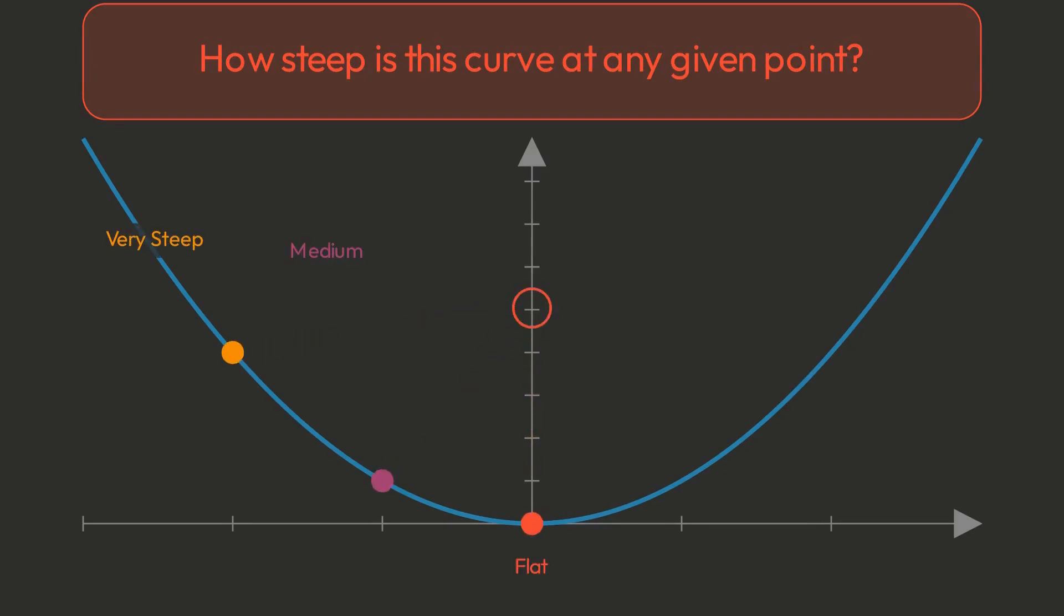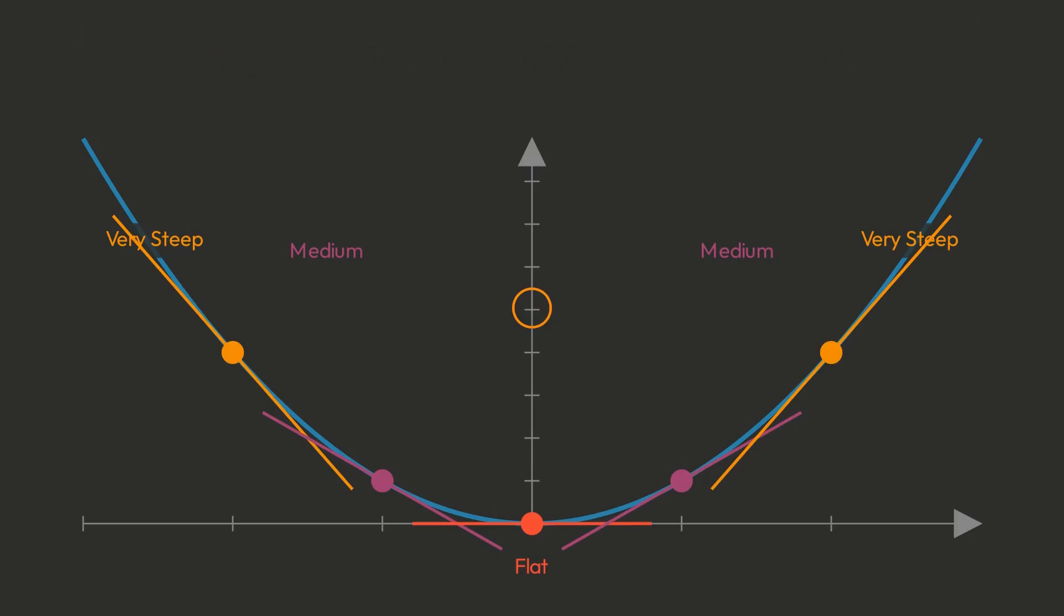Look how the steepness varies. On the left, the curve plunges downward steeply. At the bottom, it's perfectly flat. On the right, it climbs upward with increasing steepness. Each point tells a different story.